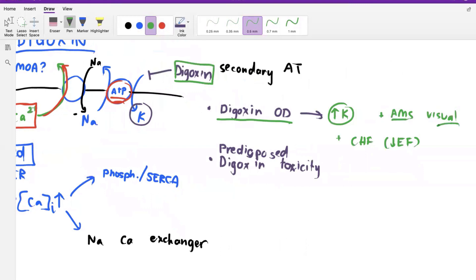And so the altered mental status and the visual disturbances, that's all related to the whole Van Gogh, starry sky, night, whatever kind of rhetoric.